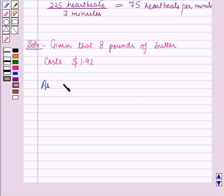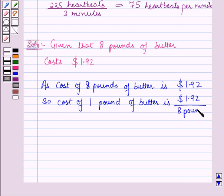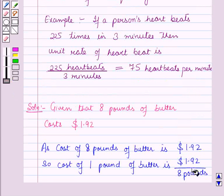So we can find the cost of butter per pound. As the cost of 8 pounds of butter is 1.92 dollars, the cost of 1 pound of butter is 1.92 dollars upon 8 pounds, and this is according to the key idea which we have discussed earlier.